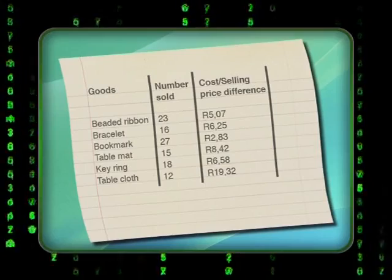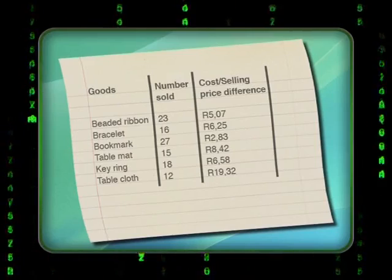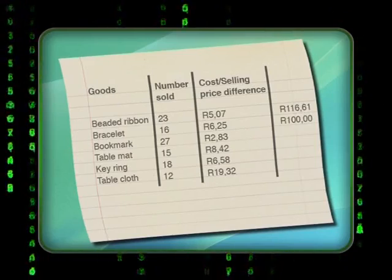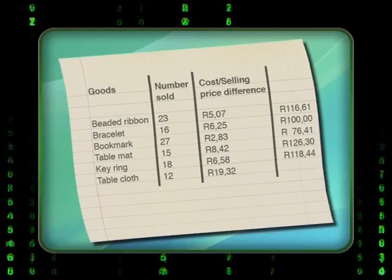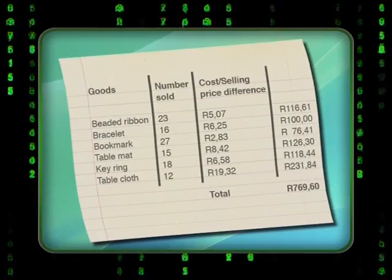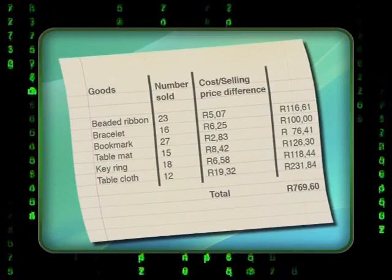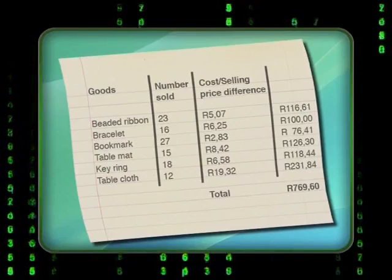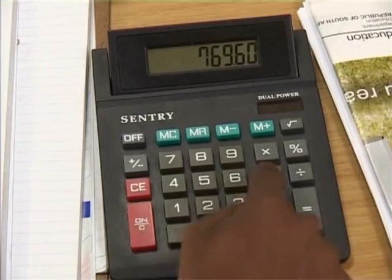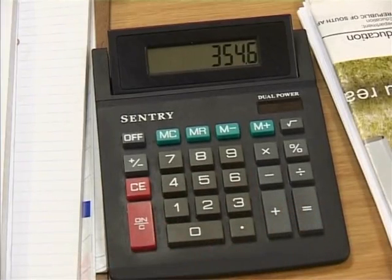I'm always ready for a challenge. I think I'll do this by working out the difference between the cost price and the selling price of each item. I'm going to add two more columns on this table. In the first column, I've written down the difference between the selling price and the cost price. Next, I'm going to multiply the number of items sold by the markup, which was 66%. Finally, I'll add all the values in this column, giving me a total of 769 rand and 60 cents, which is more than her fixed expenditure of 415 rand. She would actually be making a profit of 354 rand and 60 cents. Well, that's really cool. I think I'll help Madi do this calculation every week.